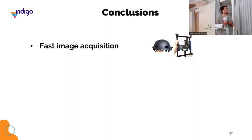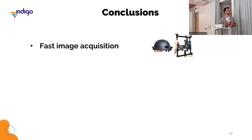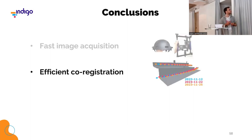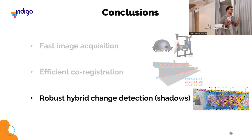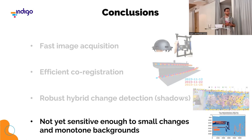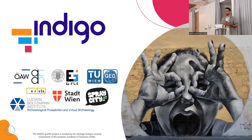To conclude: we achieved a very fast image acquisition setup which will allow us to monitor the Danube Canal in very little time. We can perform very efficient co-registration, providing a solid basis for all the change detection algorithms we are developing. We have already developed a robust hybrid change detection method that is robust against shadows. However, we will continue working on it as it is not yet sensitive enough to very small changes and also not to monotone backgrounds. Thank you for your attention.